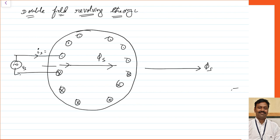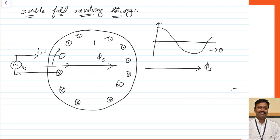With respect to this axis, as we move on, the MMF goes on decreasing. The MMF will become zero here and go on decaying. We can say that the MMF will be maximum at the axis, go on decaying with respect to theta — this is the flux distribution in the field.